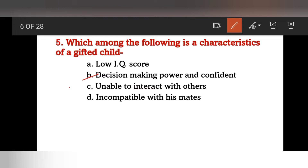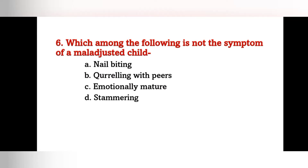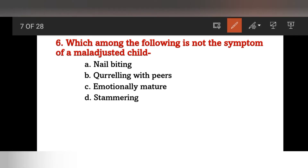Gifted children do not have a low IQ score — they have an above average IQ. Next: which of the following is NOT a symptom of a maladjusted child? Options: nail biting, quarreling with peers, emotionally mature, or stammering? The right answer is emotionally mature.